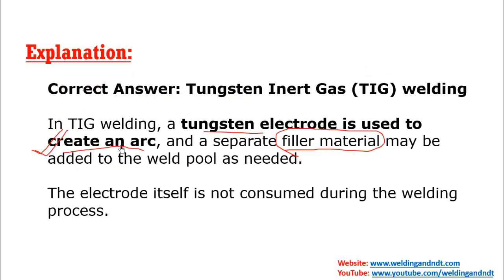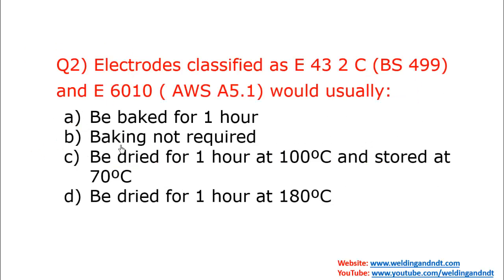However, in TIG welding, electrodes are not consumed — they are only used for creating an arc. So option C is the correct answer. Now, question number two: electrodes classified as E6010, which is an AWS A5.1 classification.